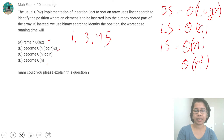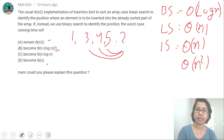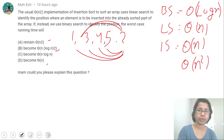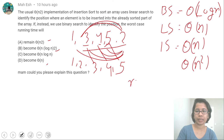Suppose a list is given and you need to insert 2. In case of linear search, you compare with 5 — is it less than 5? Yes. Then compare with 4 — is it less than 4? Yes. Then compare with 3 — is it less than 3? Yes. Then compare with 1 — is it less than 1? No. So it is greater than 1; now you find the position and write 2 there. Then you shift the remaining elements to the right: 3 is shifted, 4 is shifted, then 5 is shifted. So for this comparison it will take n.